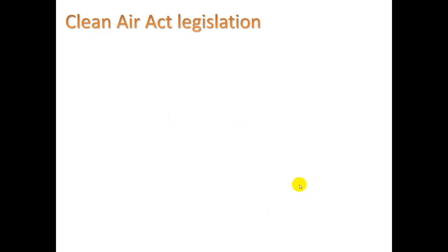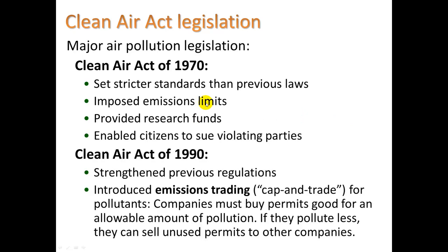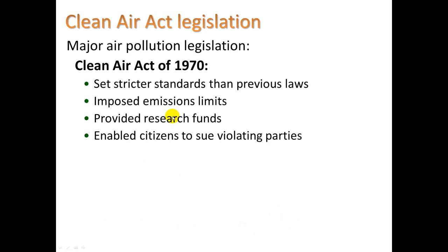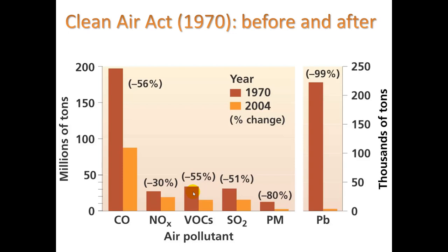The Clean Air Act legislation was major — enacted in 1970, it imposed emissions limits, provided research funds, and enabled citizens to sue violating parties. It was strengthened in 1990 with more details and regulations, and it also introduced emissions trading, also called cap-and-trade, where companies must buy permits for an allowable amount of pollution. If they pollute less, they can sell their unused permits to other companies — essentially buying and selling the right to pollute.